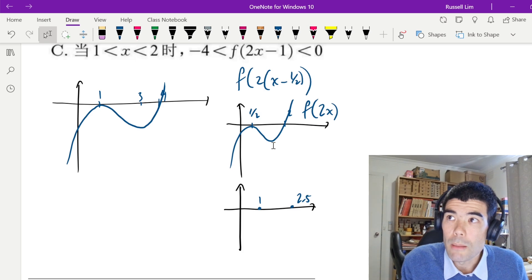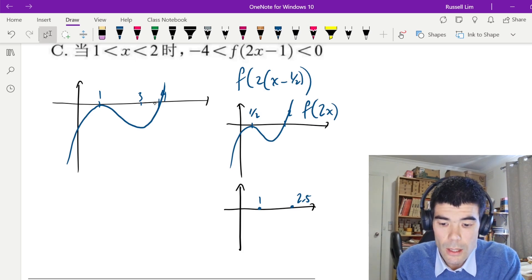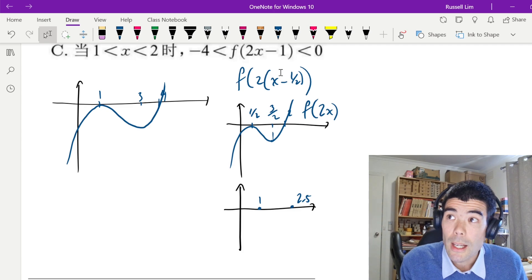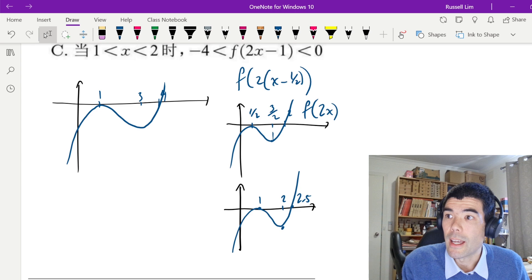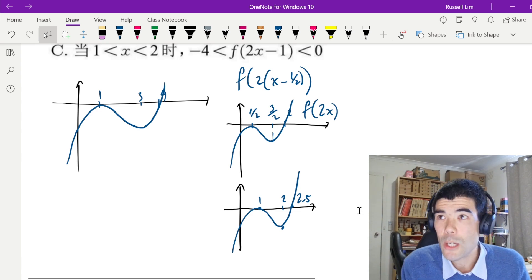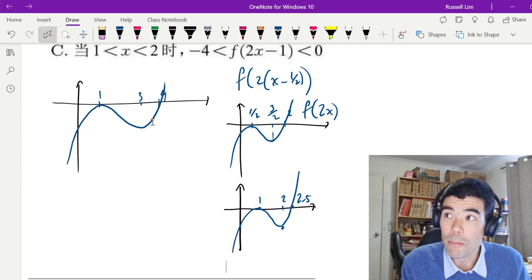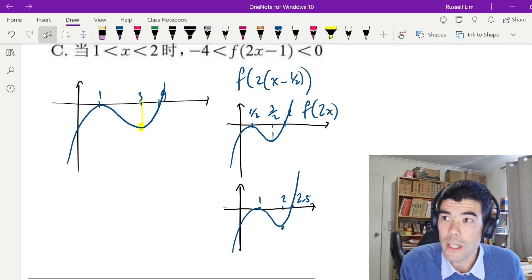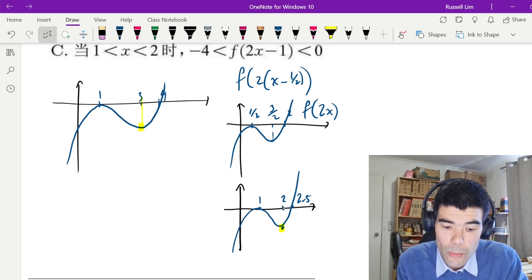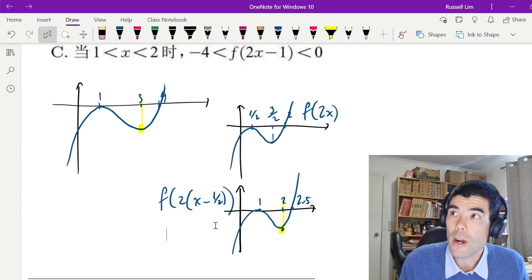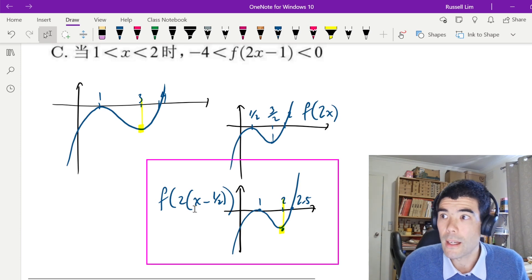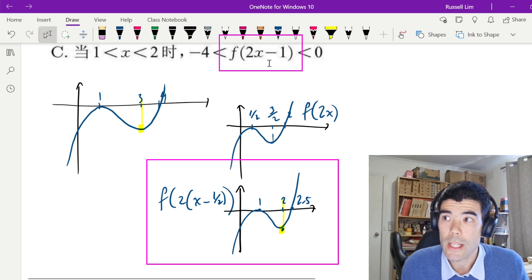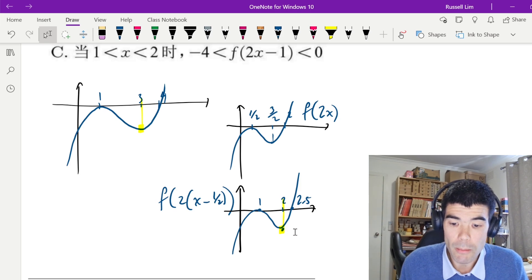And the local minimum, well, here we half 3 to get 3/2. Once we shift half to the right, we're actually going to be back to 2. So interesting that fact we knew from option A that we have a local minimum here at x equals 3 turns out to be really useful because now we have a local minimum when x is equal to 2. So this one here is the graph of f of 2(x - 1/2) or f(2x - 1).